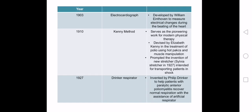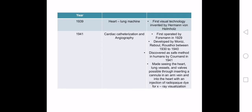By 1903, the ECG was developed by Willem Einthoven to measure electrical changes during the beating of the heart. By 1910, the Kenny method, which served as the pioneering work for modern physical therapy, was devised by Elizabeth Kenny in the treatment of polio using hot packs and muscle manipulation, prompting the invention of a new stretcher called the Sylpheous stretcher in 1927, intended for transferring patients in shock. By 1927, the Drinker respirator was invented by Philip Drinker to help patients with paralytic poliomyelitis recover normal respiration with the assistance of an artificial respirator.